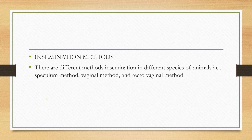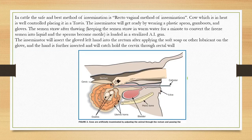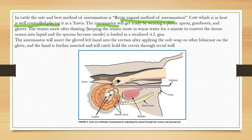There are different methods of insemination in different species of animals. Three important methods are: the speculum method, the vaginal method, and the recto-vaginal method. In cattle, the safest and best method of insemination is the recto-vaginal method, practiced on a cow that is in heat during the estrus cycle.